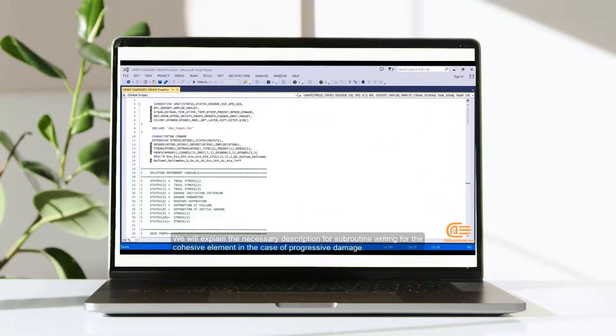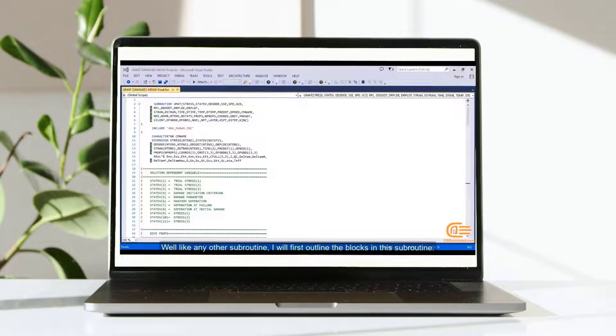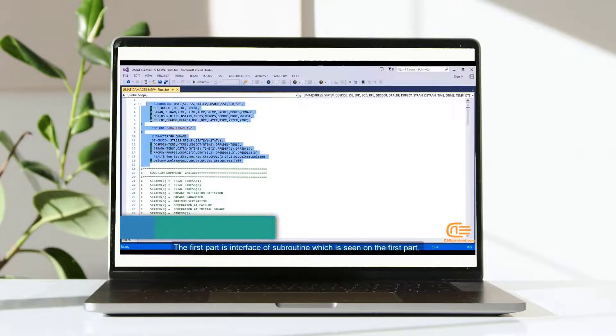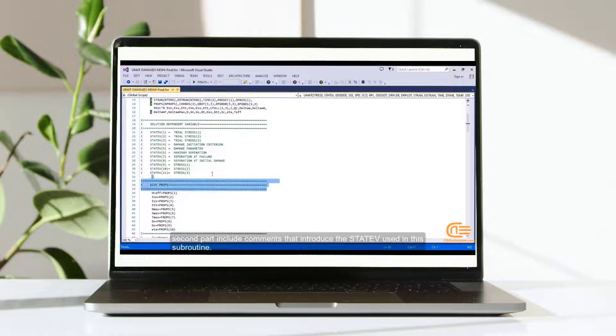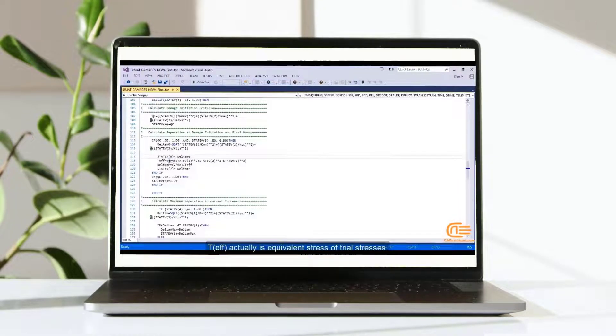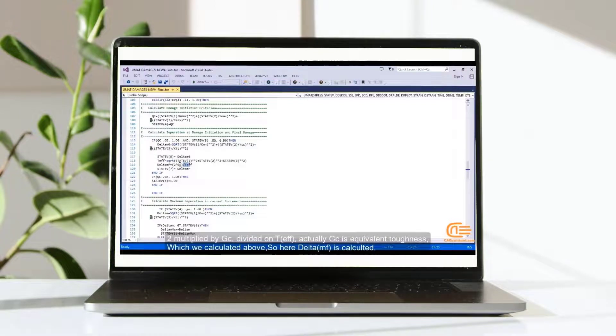In this section, we will explain the necessary description for subroutine writing for the cohesive element in the case of progressive damage. Well, like any other subroutine, I will first outline the blocks in the subroutine. The first part is interface of subroutine, which is seen on the first part. Second part includes comments that introduce the state V used in this subroutine. Delta M0 is then stored in state V8, in the next step will not enter into this condition loop. T effective actually, is equivalent stress of trial stresses. 2 multiplied by GC divided on TEFF. Actually, GC is equivalent toughness, which we calculate above. So here, delta MF is calculated.